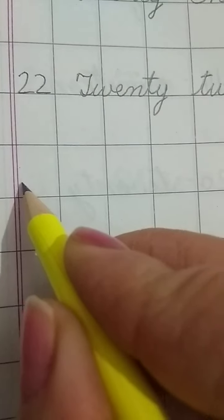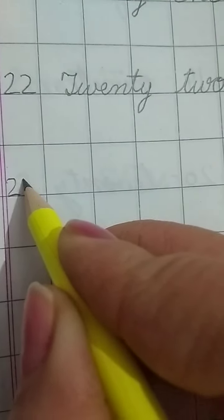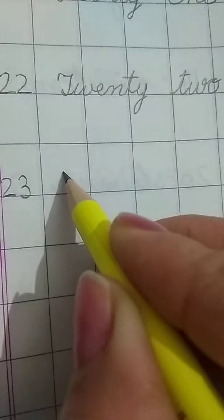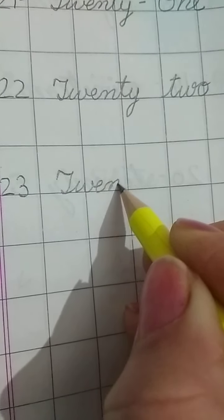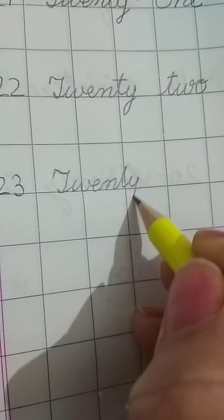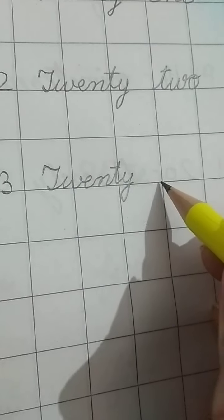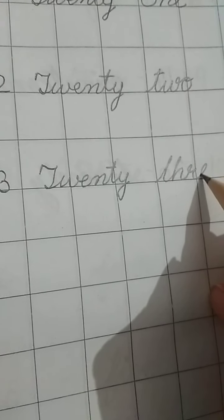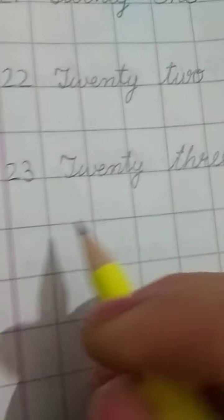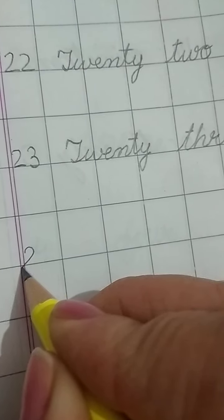23, T-W-E-N-T-Y, twenty-three, T-H-R-double E, three. Okay, 24.